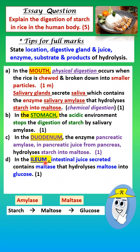Lastly, in the ileum, which is the last part of the small intestine, intestinal juice secreted by the ileum contains the enzyme maltase. Maltase hydrolyzes maltose into glucose, and this completes the digestion of starch.